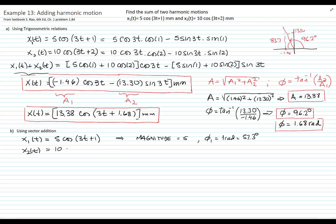x2 is 10 cosine of 3t plus 2. In this case, the magnitude is 10 and the phase angle is 2 radians, which is 114.6 degrees. So let's draw these vectors.